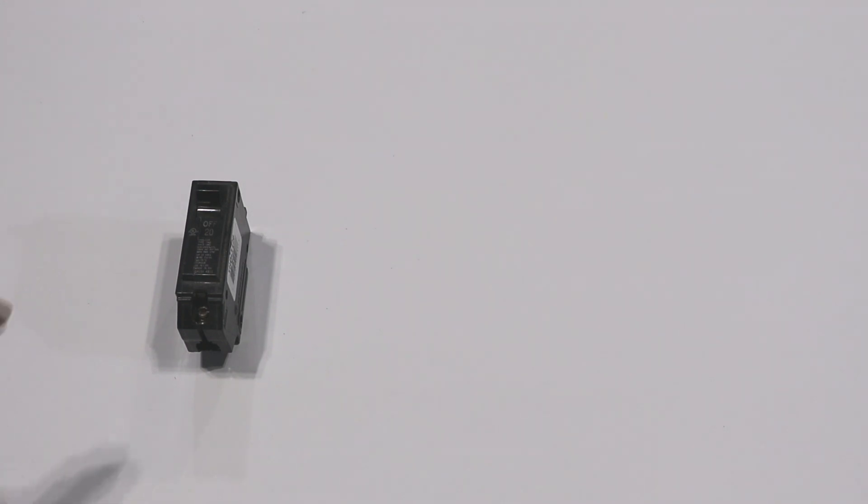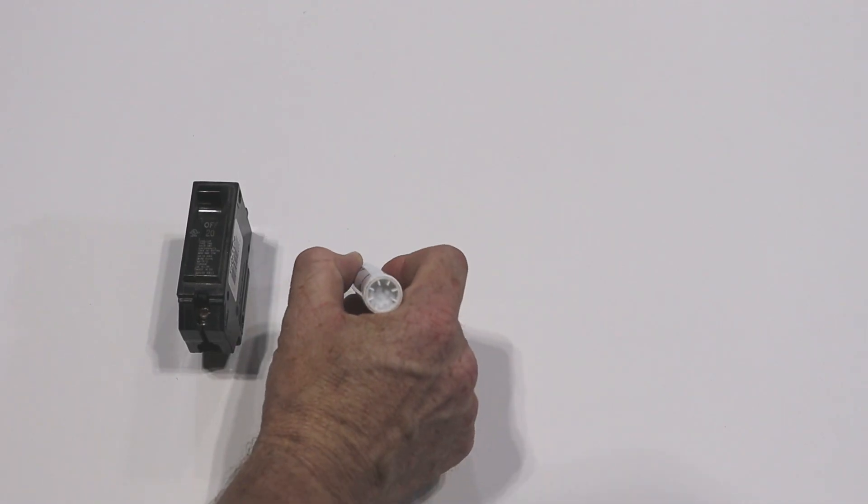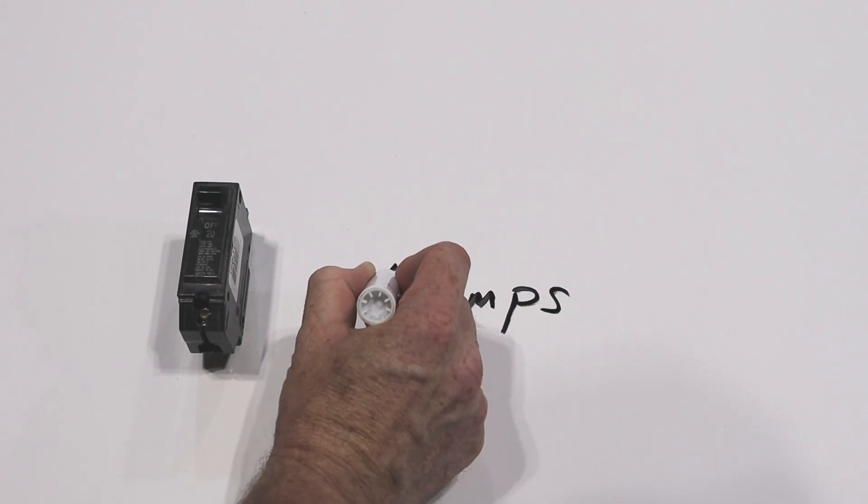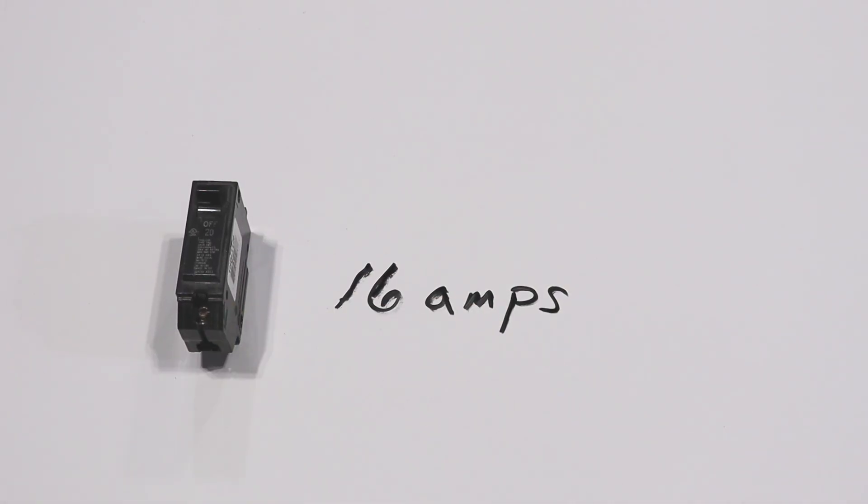Here I have a 20 amp breaker. Breakers are used to power your circuits but they will trip at 80% of the current draw as a safety feature. So if I have a 20 amp breaker I really only have 16 amps to play with on this circuit.